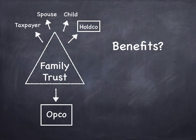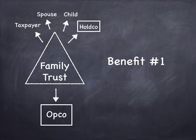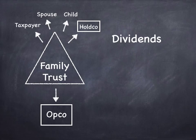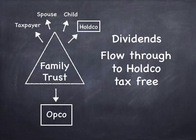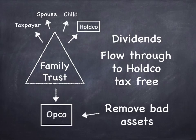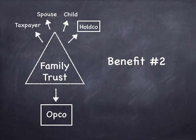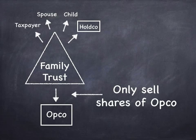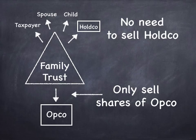What are the benefits? Let me go through the benefits in detail. Benefit number one: dividends flow through to the holdco tax-free, which is a great way to remove bad assets. This structure is different from the straight holdco structure because we can flow the dividends up to the holdco tax-free, no problem. This directly leads to benefit number two: you only have to sell shares of the operating company. We don't have a problem with bad asset buildup in the holdco — we only have to sell the operating company. That's a huge benefit.